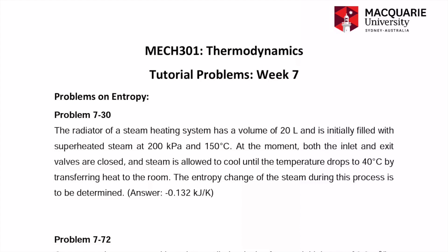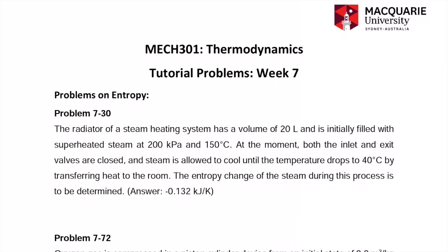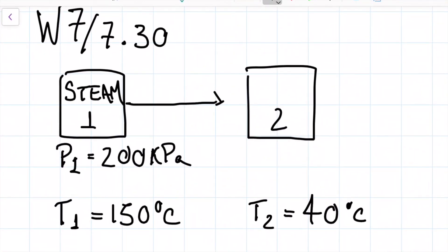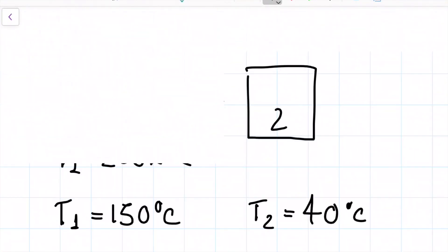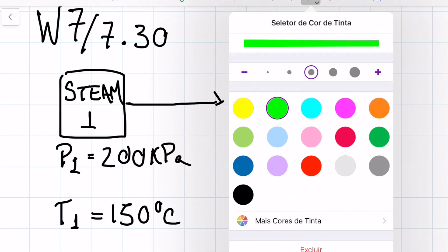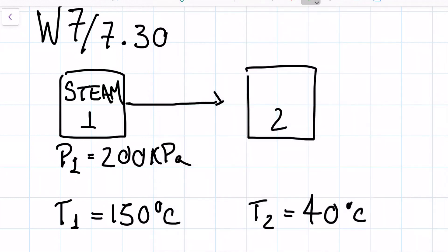Okay, so first thing note that it's asking for an answer in kilojoules per Kelvin. So we're going to have to get rid of the kilogram on the bottom of the entropy. This problem is as simple as finding the S or the entropy for our first state and then finding the entropy of the second state and then just subtracting the two, final minus initial.